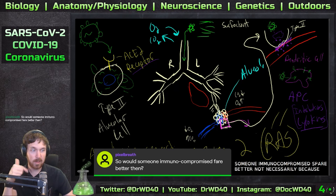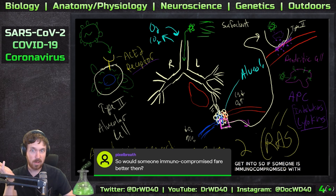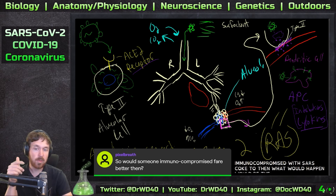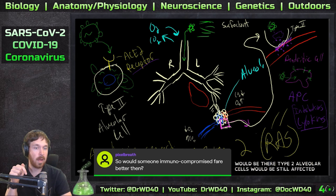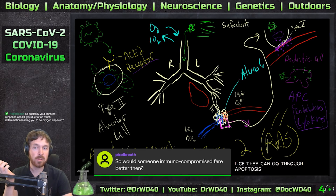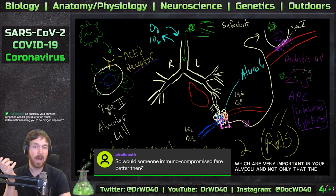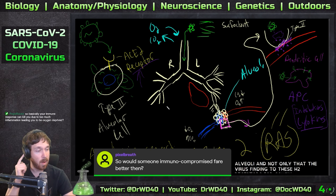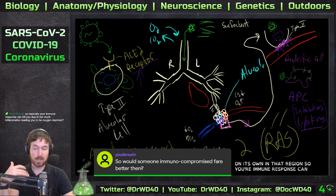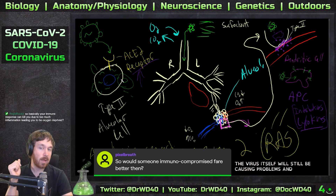A viewer asked: would someone immunocompromised fare better? Not necessarily - and that's what I was just about to get into. If someone is immunocompromised with SARS-CoV-2, their Type 2 alveolar cells would still be affected, producing less surfactant. These cells could get overrun, lyse, or go through apoptosis - you'd lose these Type 2 alveolar cells which are very important. Also, the virus binding to ACE2 receptors would cause inflammation on its own in that region. The virus itself will still be causing problems and replicating without an immune response.